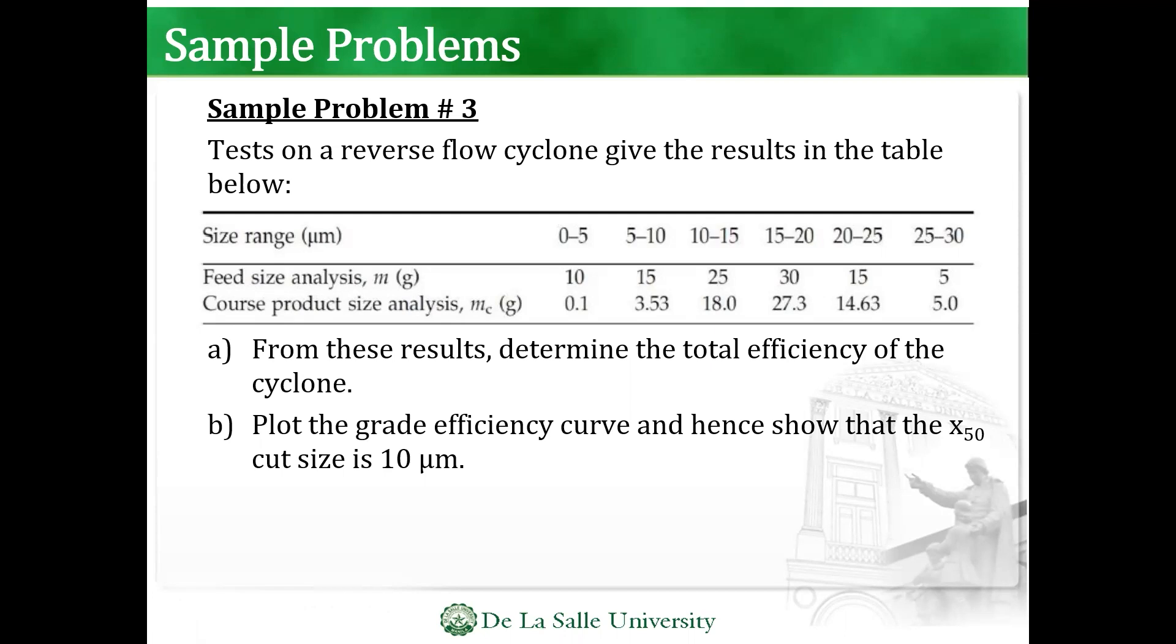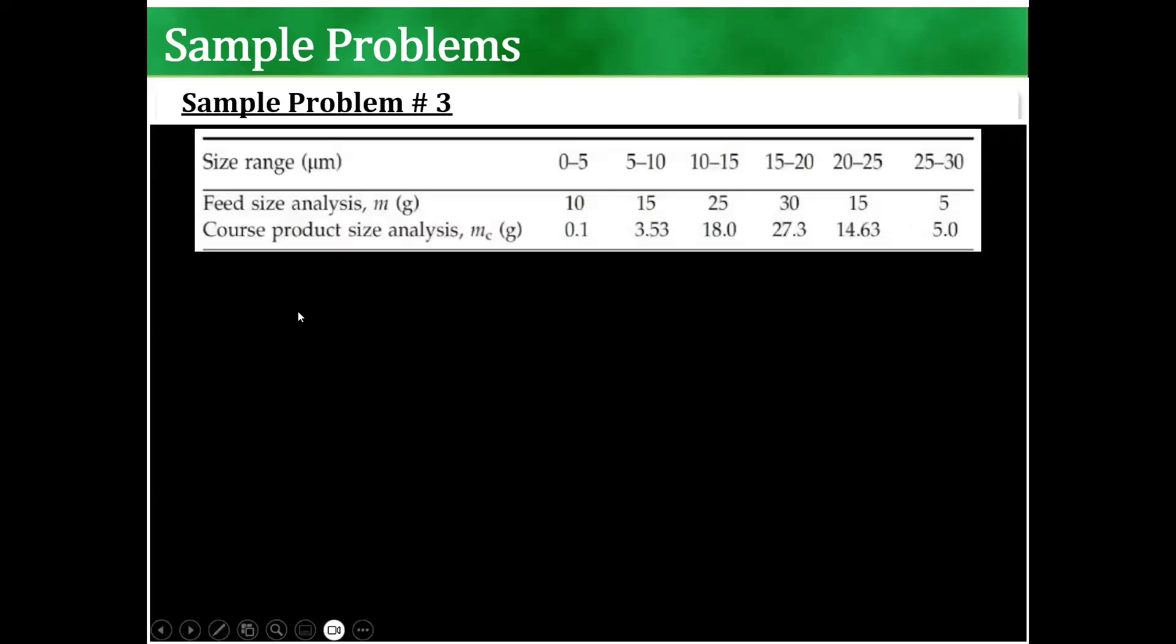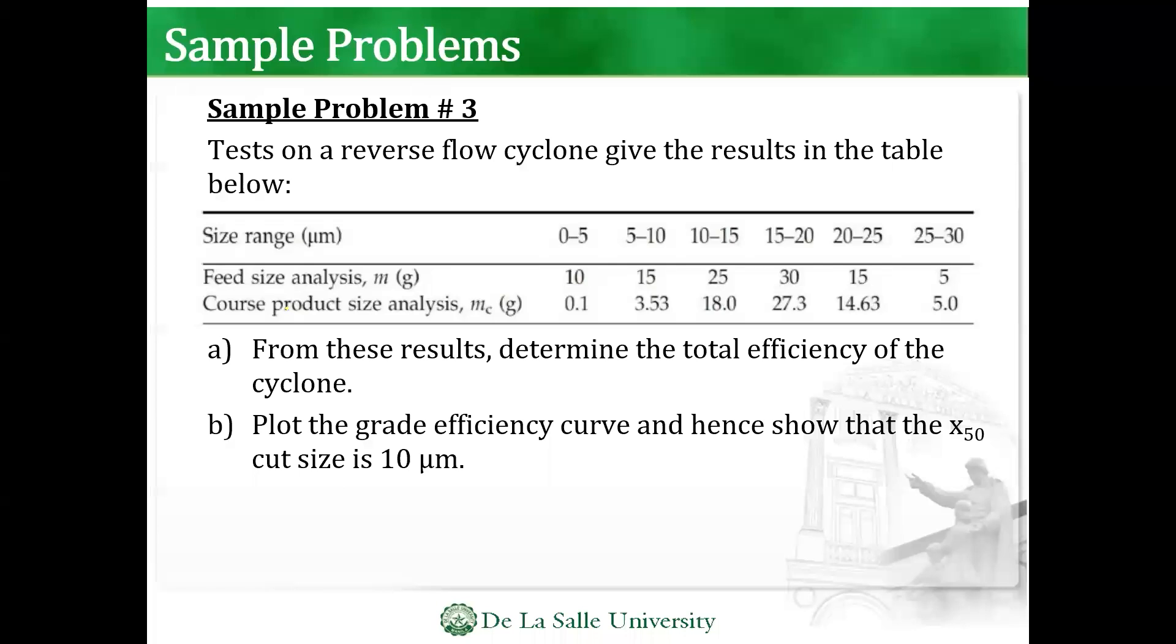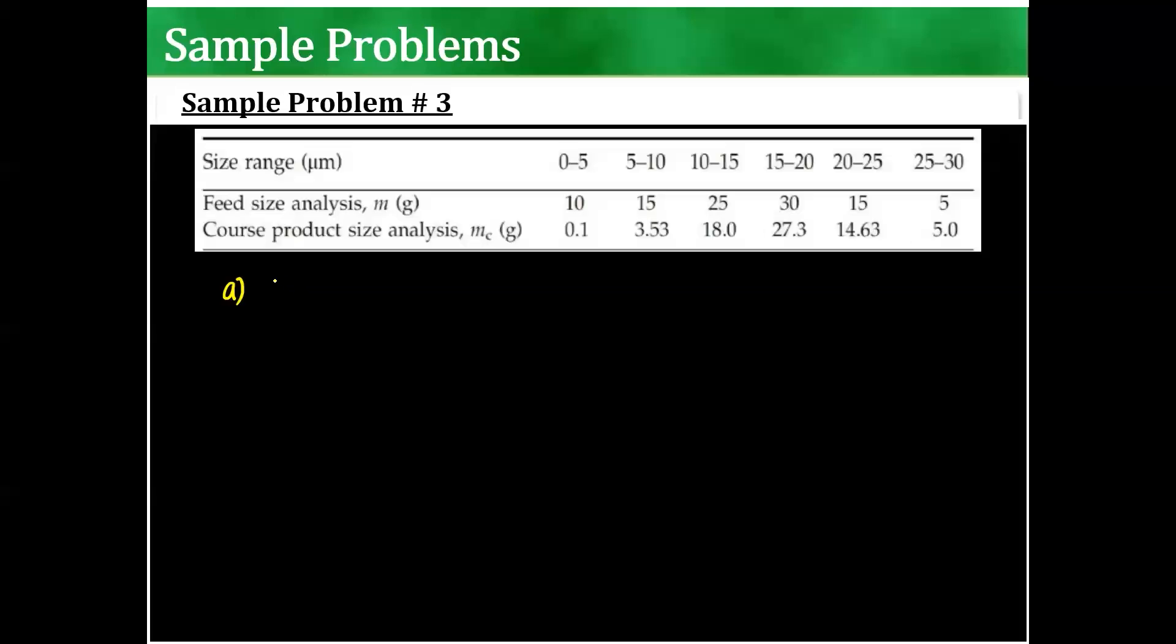So for that, basically, let's just solve. Part A is total efficiency of the cyclone and Part B, plot the grade efficiency curve.